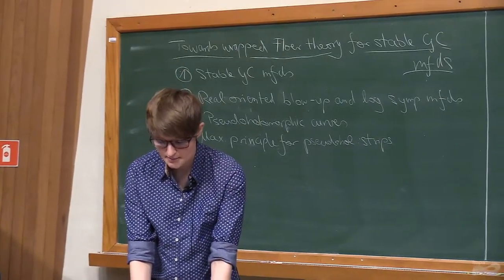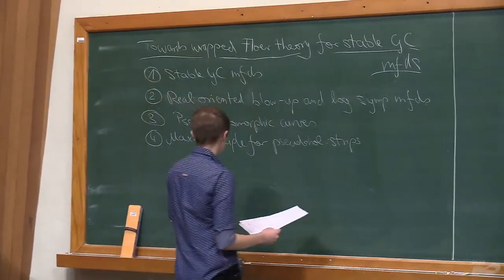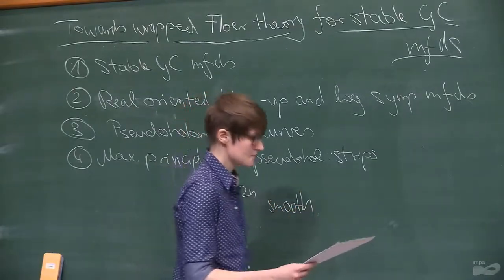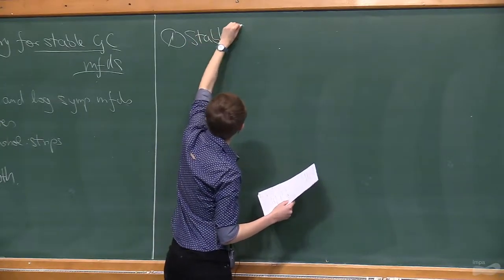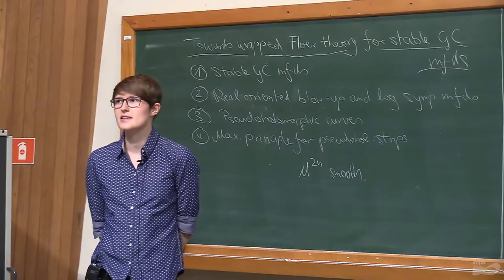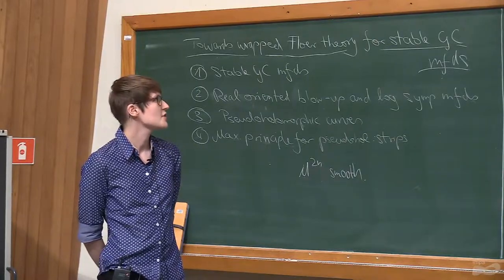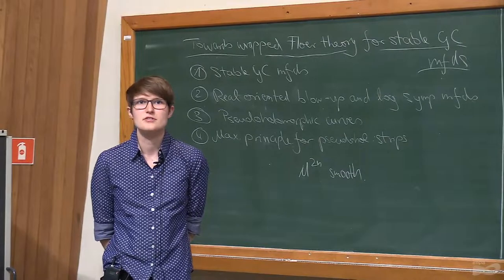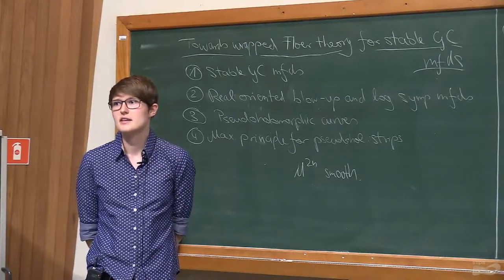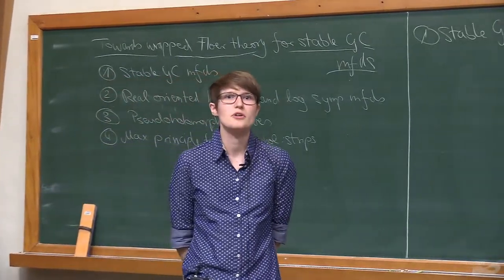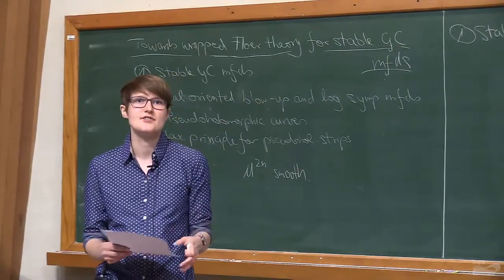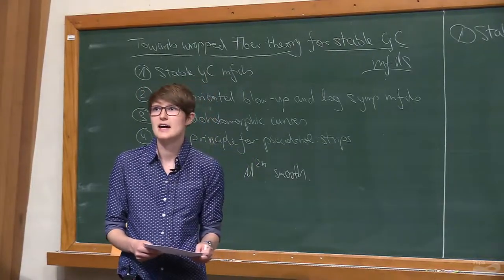I'll motivate the setup and then give some initial results. Throughout the talk we will be dealing with even-dimensional smooth manifolds. The setting we're interested in is stable generalized complex geometry. Stable generalized complex structures are a generalization of both complex and symplectic structures, developed by Hitchin and Marco Gualtieri in the early 2000s. Their main interest is precisely because symplectic and complex manifolds are somehow the extreme examples on either end of generalized complex geometry.